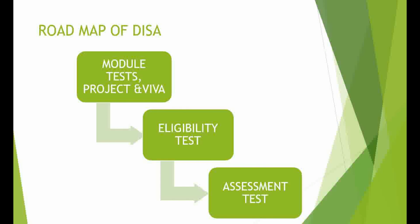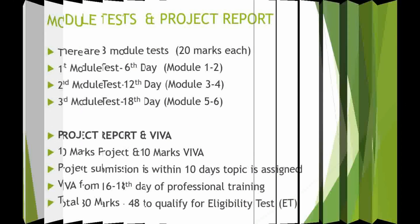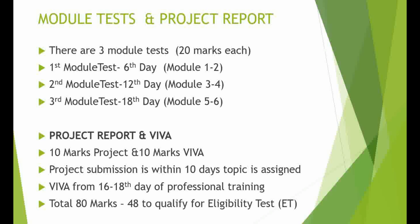Briefly, the DISA roadmap goes as follows: after you give the e-learning assessment test, you are admitted to the DISA course. Once admitted and you start your professional training, you have to give module tests while training is ongoing. There is also a project component. After you qualify, you give the eligibility test, and after that you go for the final assessment test.